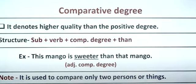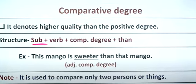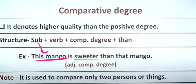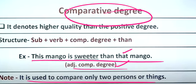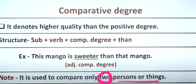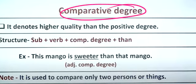The comparative degree expresses a higher quality than the positive degree. Its structure is: subject plus verb plus comparative adjective plus 'than' plus subject. For example, 'this mango is sweeter than that mango.' The comparative degree is used when comparing two things.